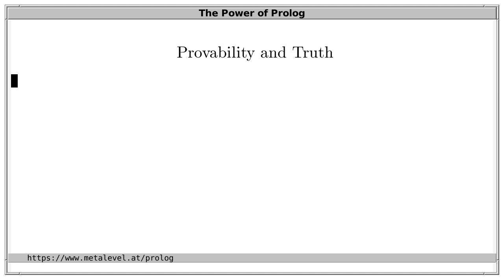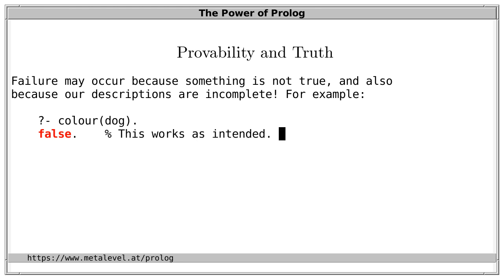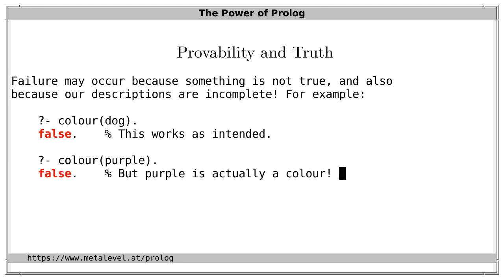There is a difference between provability and truth. If a query fails, this can be due to two reasons: a query may fail because the goal must not be true, or a query may fail simply because our description of the situation is incomplete. For example, if we ask is dog a color, then with our example program Prolog replies no, that's not the case — and this is intended, because dog is indeed not a color. On the other hand, if we ask is purple a color, Prolog also replies no — but purple is actually a color. In this case, it doesn't hold simply because we haven't said anything about purple in our program.